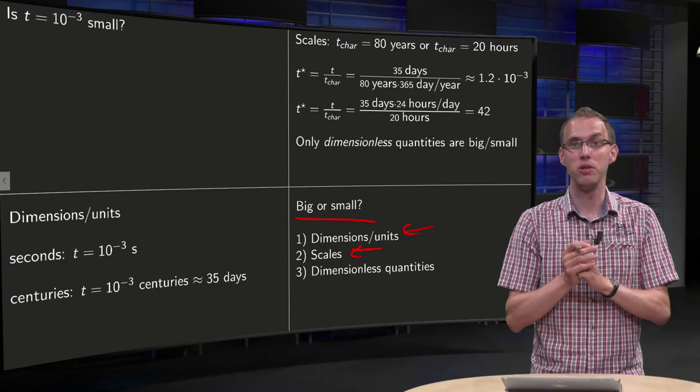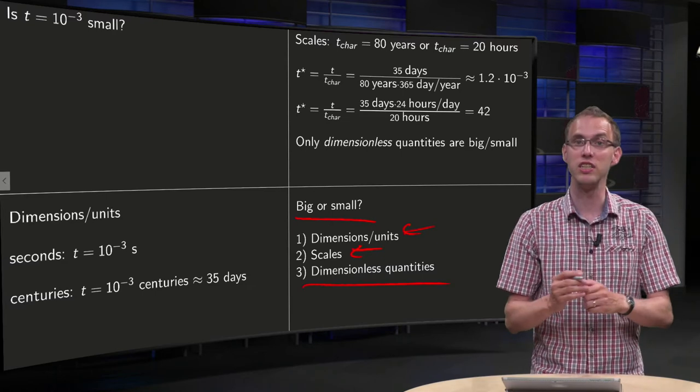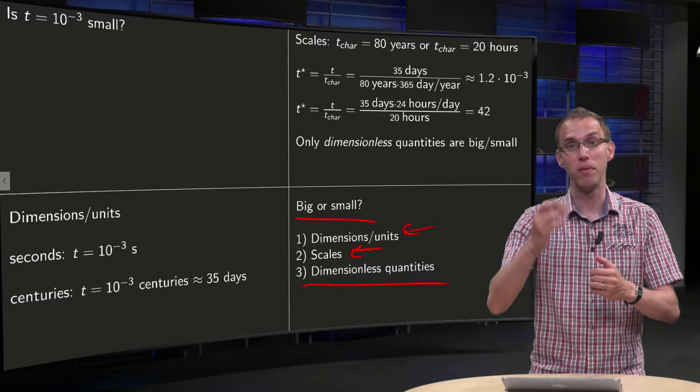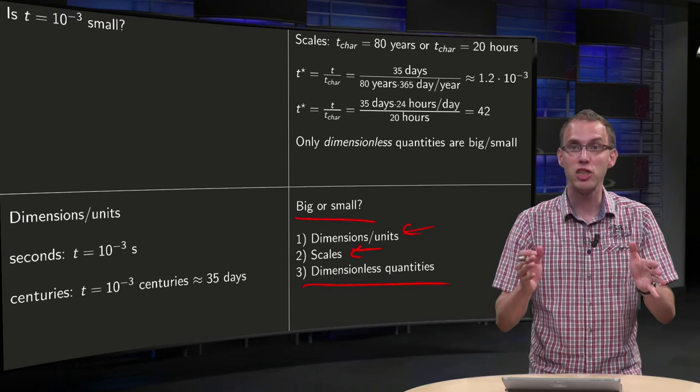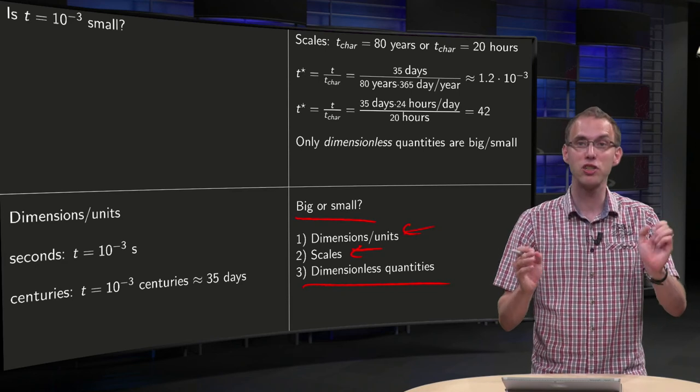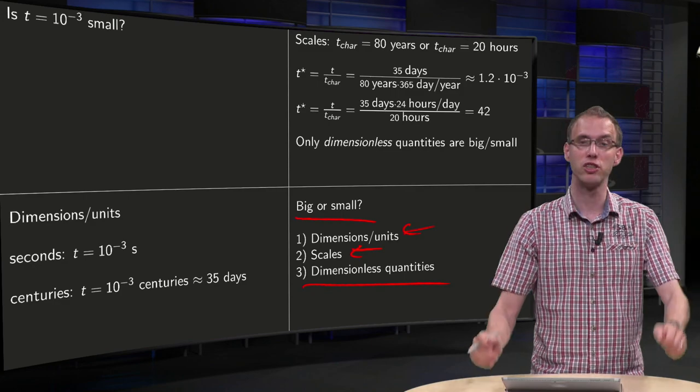The proper way to do it is to introduce some dimensionless quantities, where you divide your time by your characteristic time in order to get some dimensionless quantity. And from dimensionless quantities, you can judge whether they are small or large.